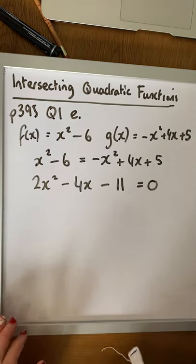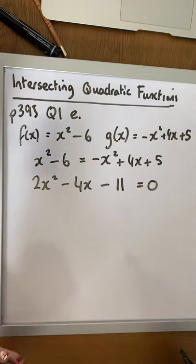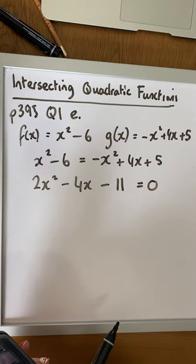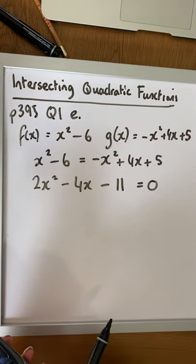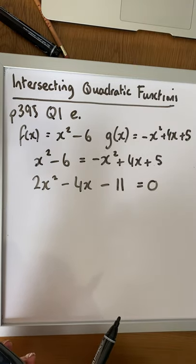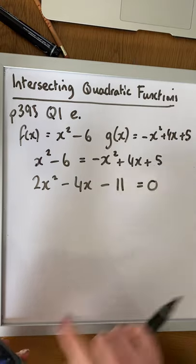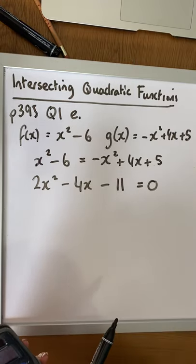So then we have a choice. We can either use the minus b formula, or we can use factorizing. Looking at the numbers here, they might be a little bit awkward. So we'll use the minus b formula. So we have minus b plus or minus the square root of b squared minus 4ac. So 4 times by 2 times by minus 11, making sure that we keep the sign there, and 2 times by 2.